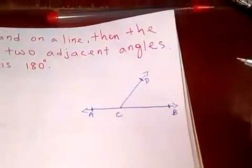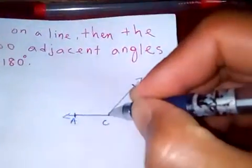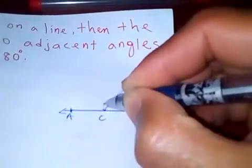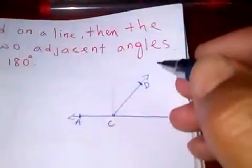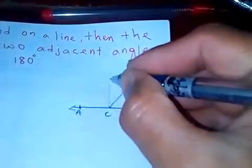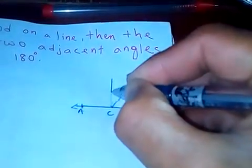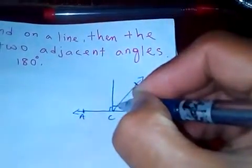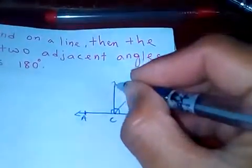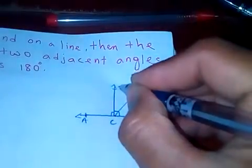Now from this, let's have some construction. From this, let's draw a perpendicular line which makes 90 degrees on both sides. Let's say this is E.